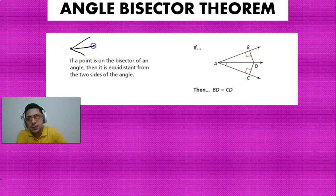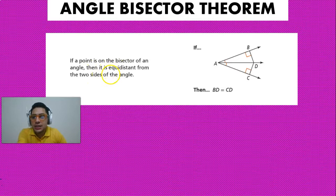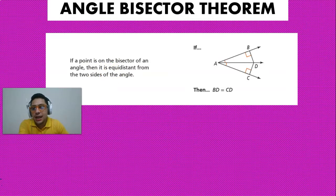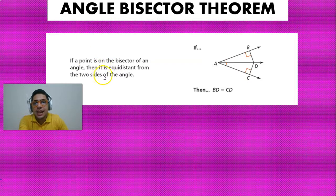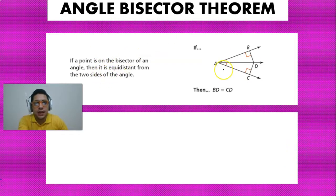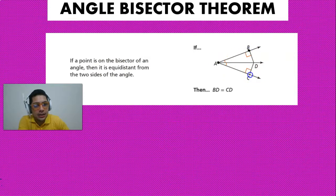If a point is on the bisector of an angle, then it is equidistant from the two sides of the angle, and this is what we're going to be understanding as the angle bisector theorem. So if we have points A, B, and C that form an angle like so,